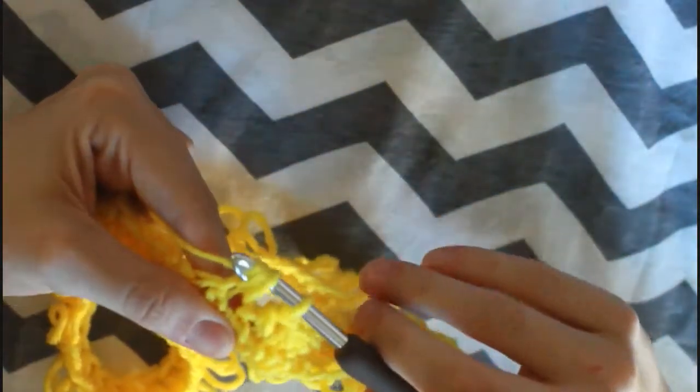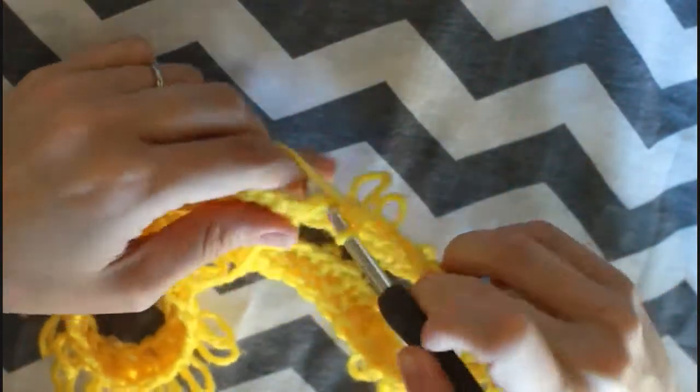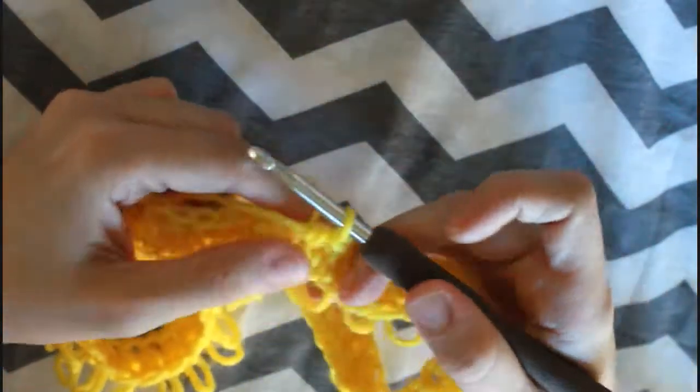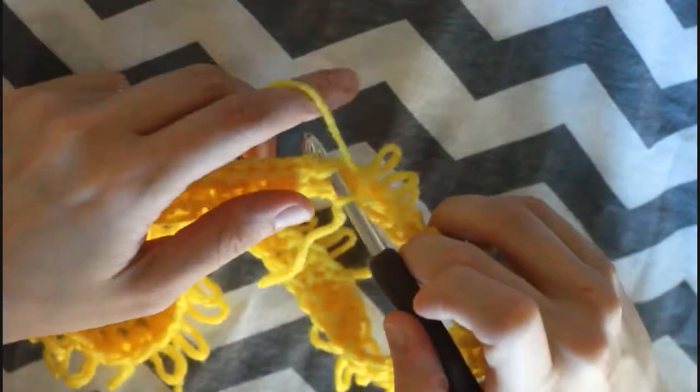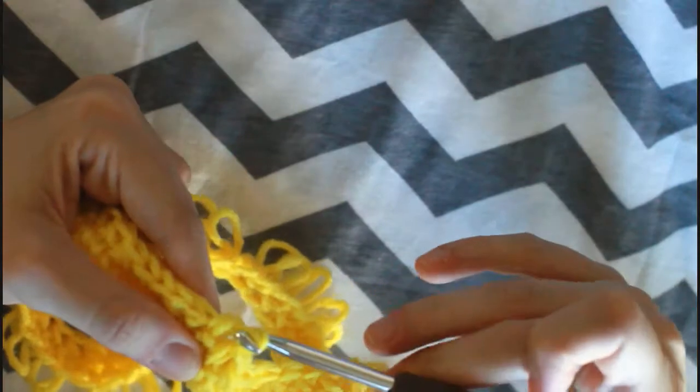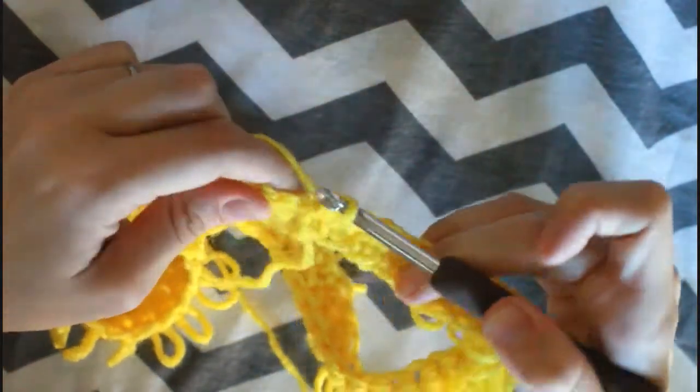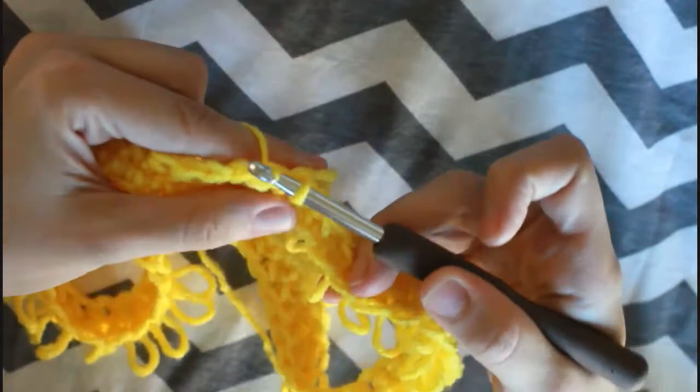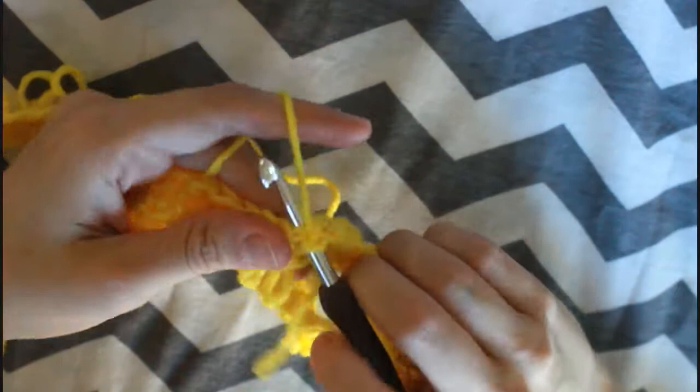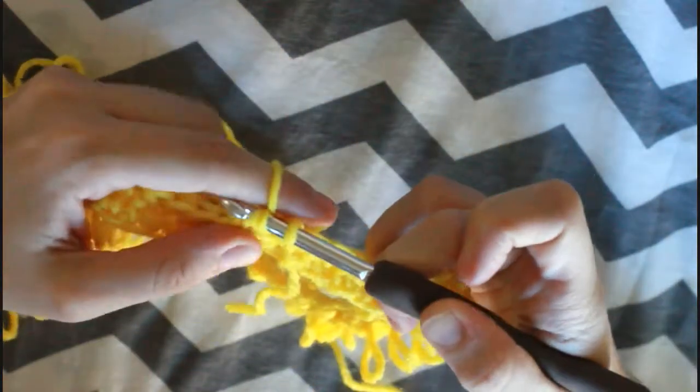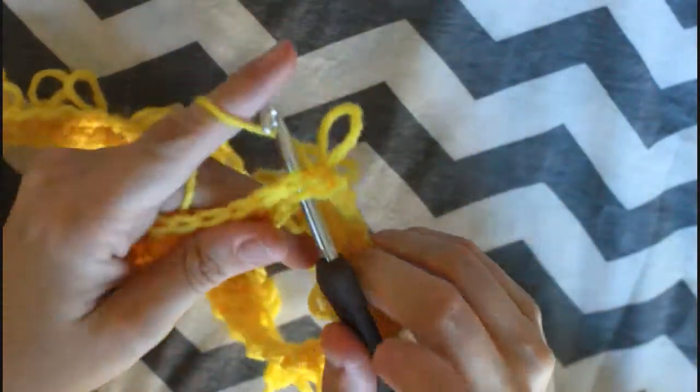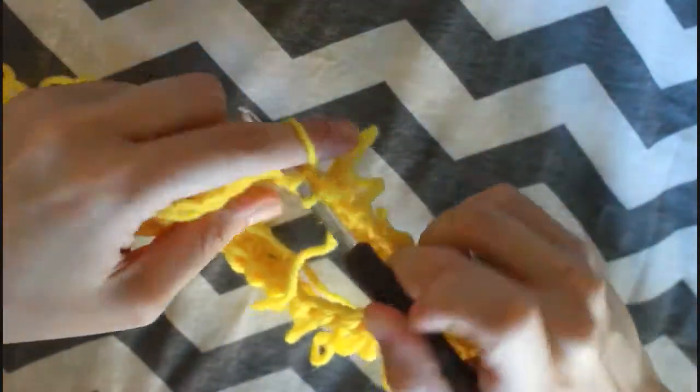And just as before, once we get to the end, we're gonna do a slip stitch to close. We are going to repeat this second round of loop stitches around until the end and closing with a slip stitch until we get to round number 16. Again, chain 1 to start and loop stitches all the way until the end until you work 16 rounds.